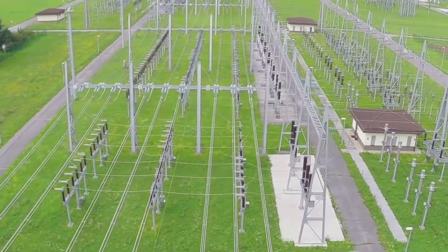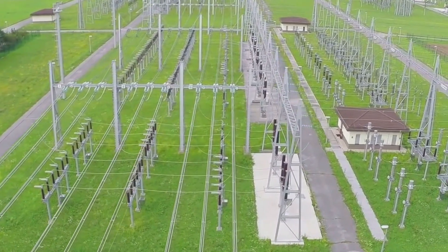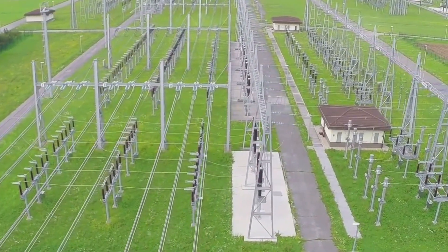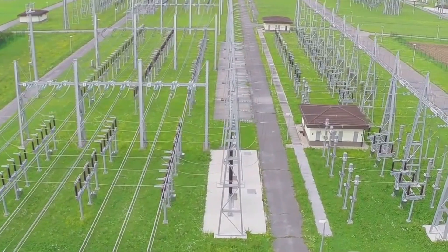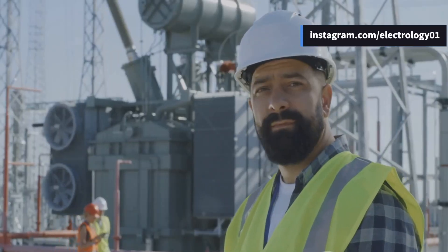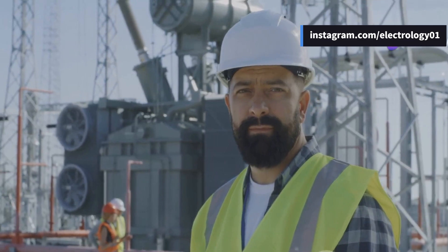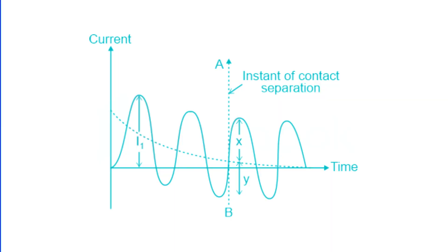Ever wondered how a tiny circuit breaker handles massive electrical surges? It all comes down to two key ratings: making current and breaking current. Today we'll crack the code on these electrical champs.